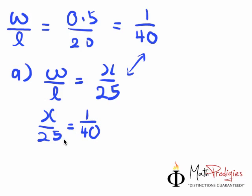So, you bring the 25 over, you times 25, you get X equals to 25 over 40. And you do it, and you get the answer, which is 0.625. Very simple. If you got this right, good job, you're a math prodigy.